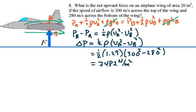But we want to find the force. Since the pressure difference will equal a force per area, the force is going to equal the pressure difference times the area. So that's going to be 7,482 newtons per meter squared times 20 meters squared. Meter squares cancel out.